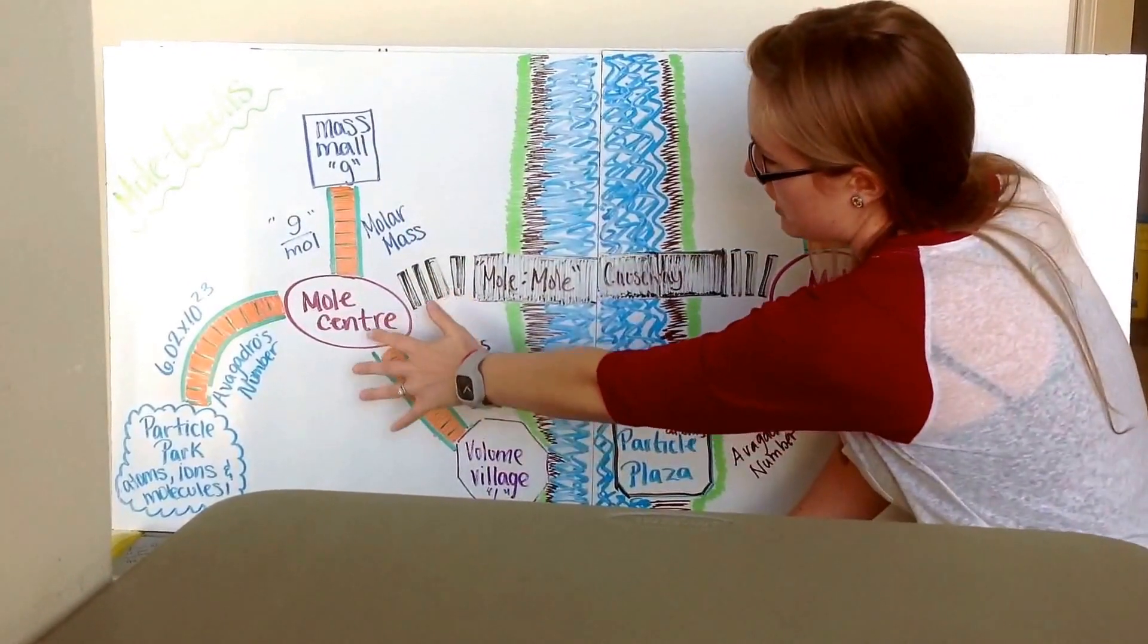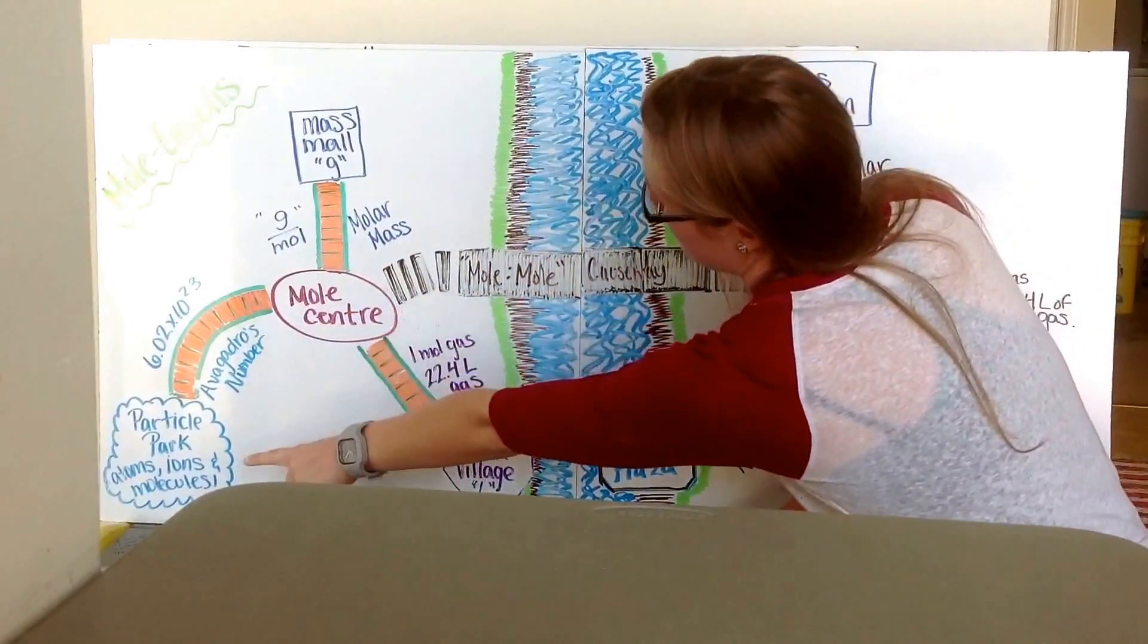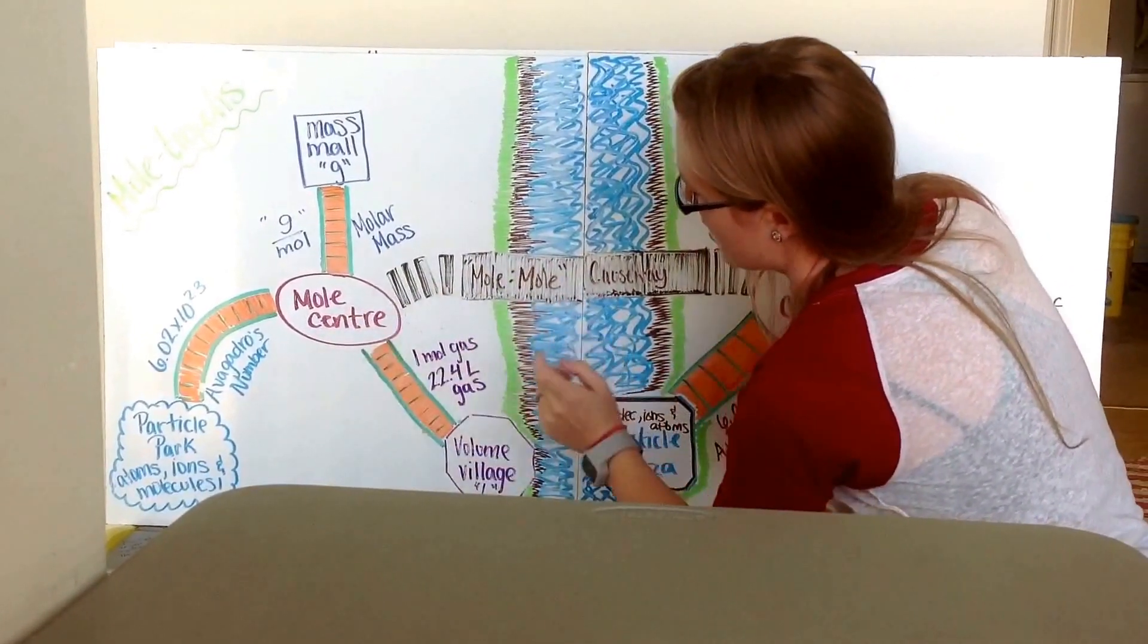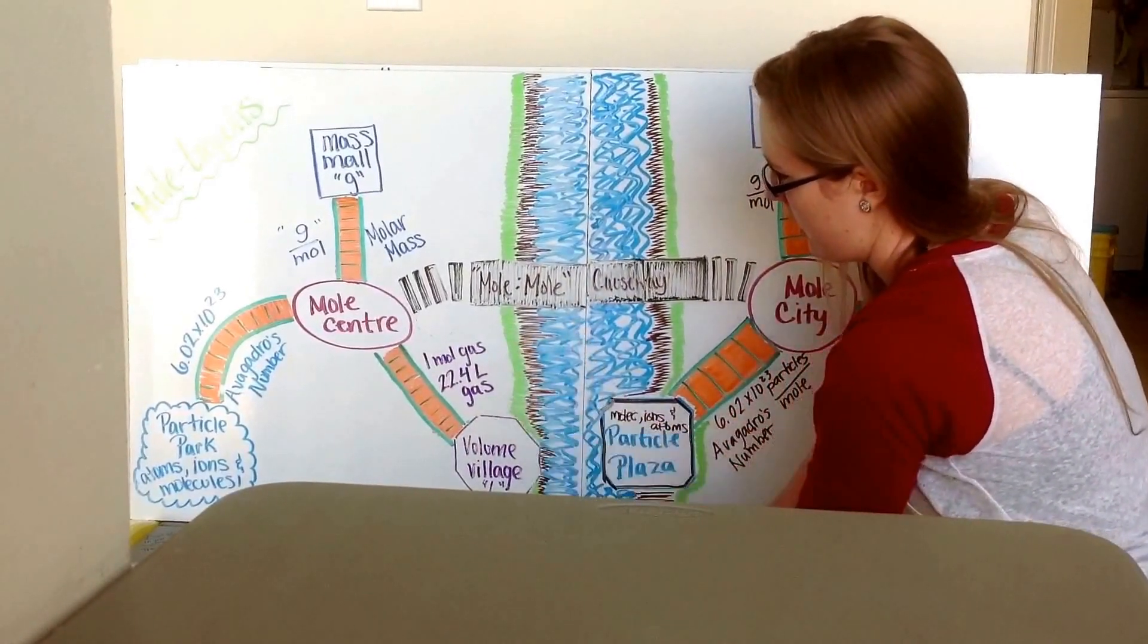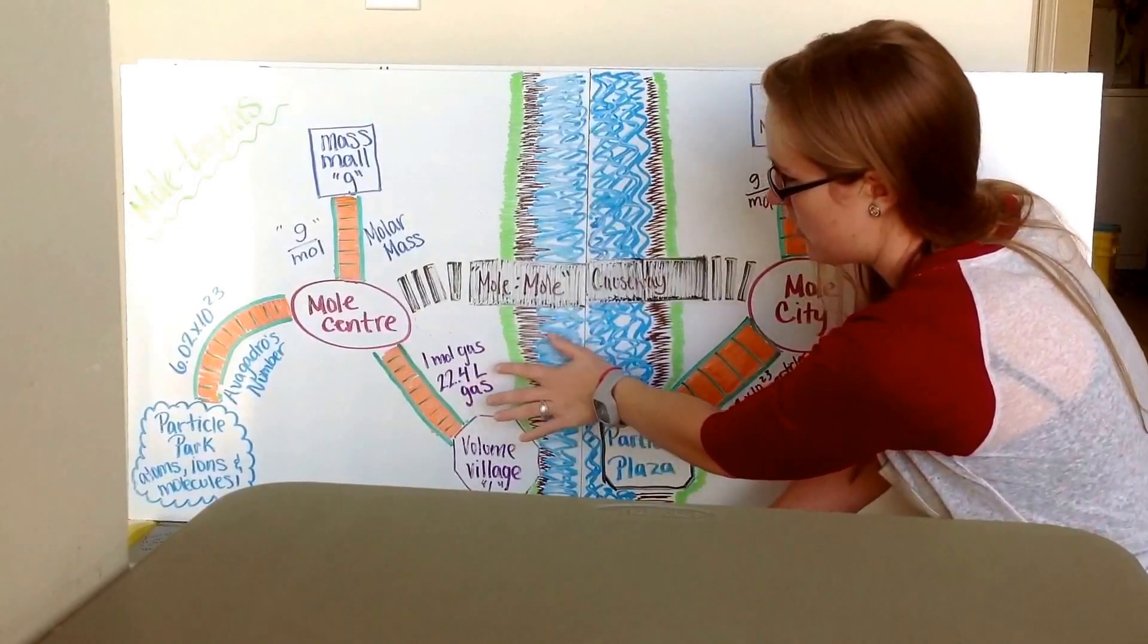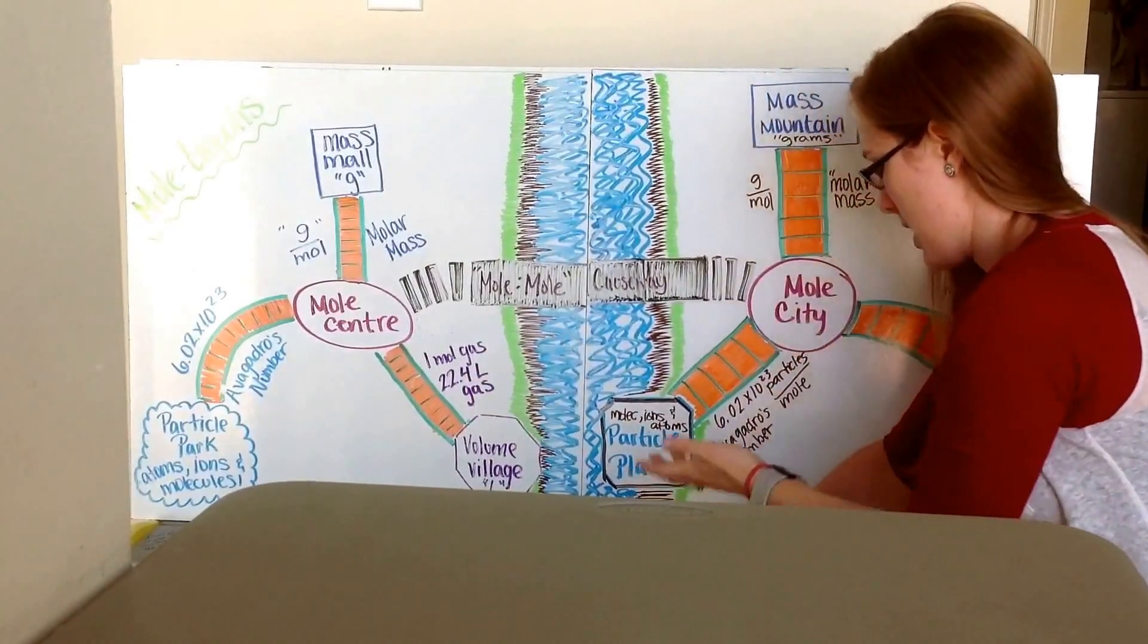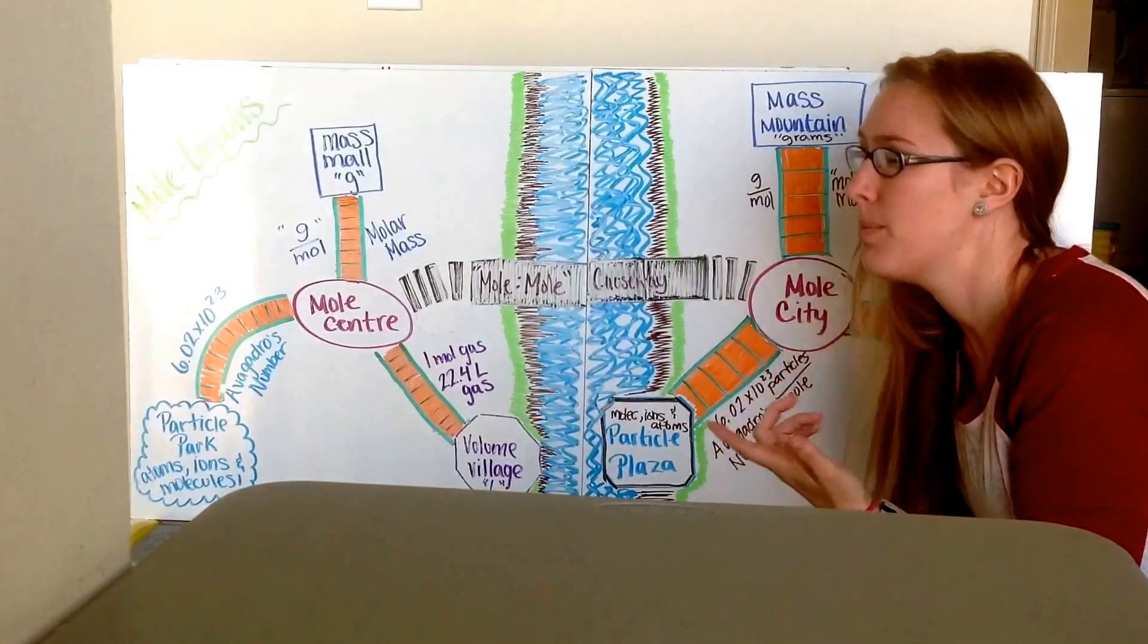So you used it to convert from moles to mass using the molar mass, you went from moles to particles using Avogadro's number, and from moles to volume using the given value of one mole of gas equals 22.4 liters of gas. And that was all fine and dandy for using just one single compound.